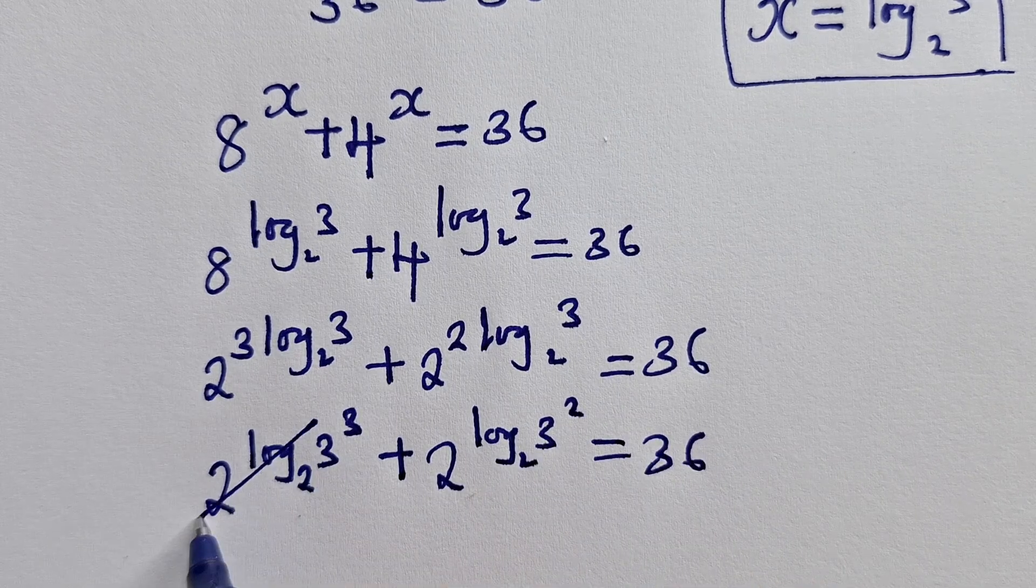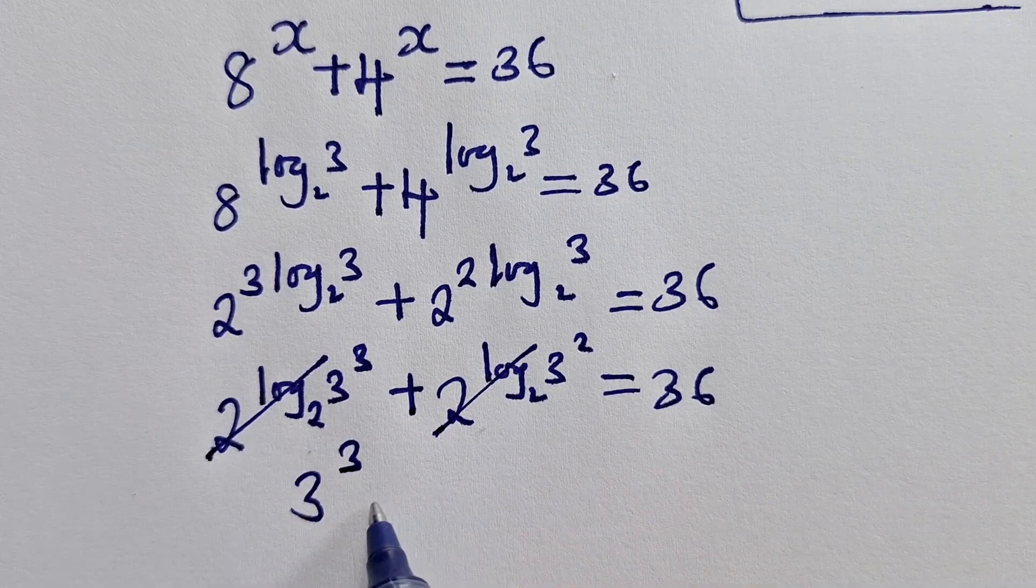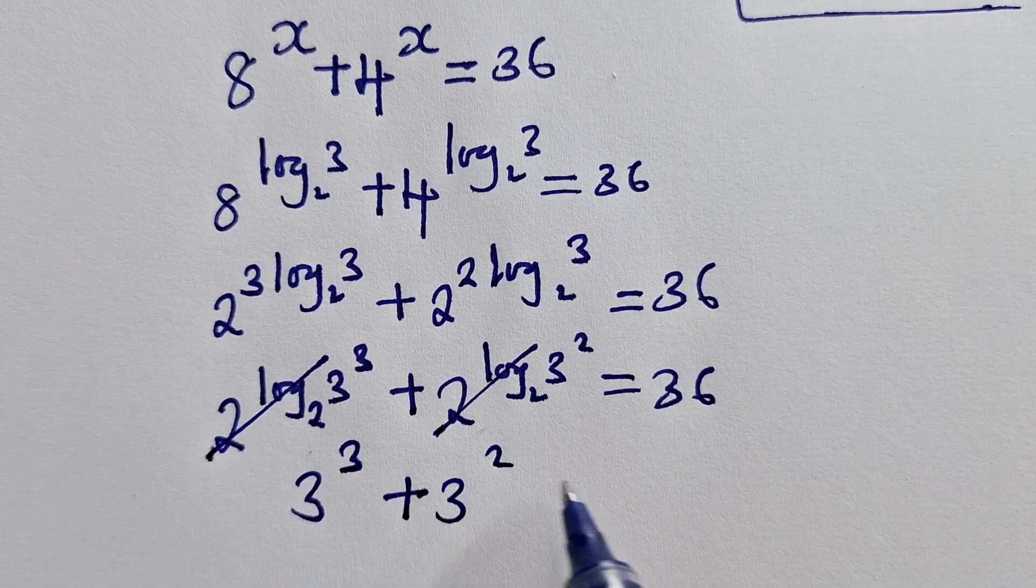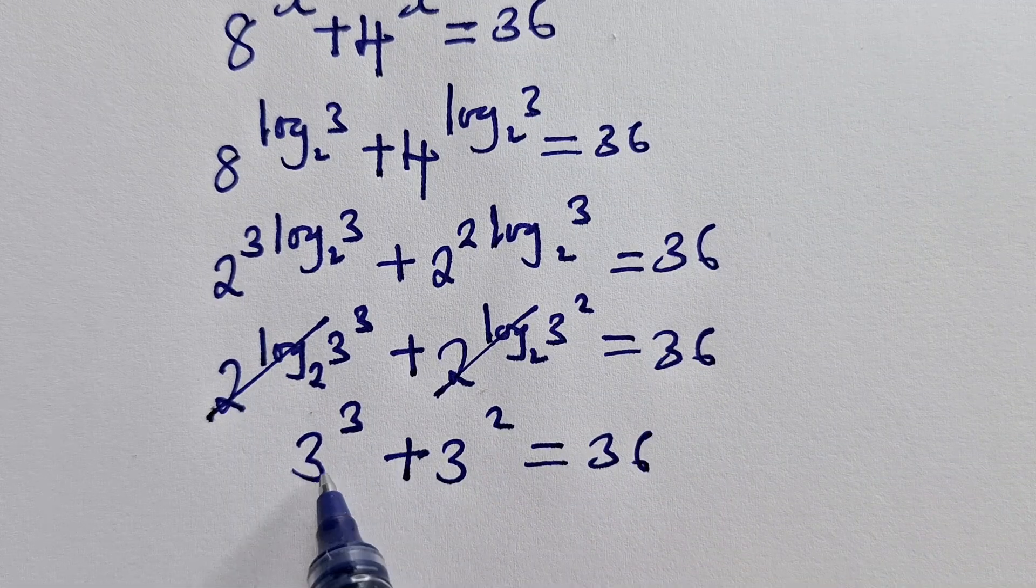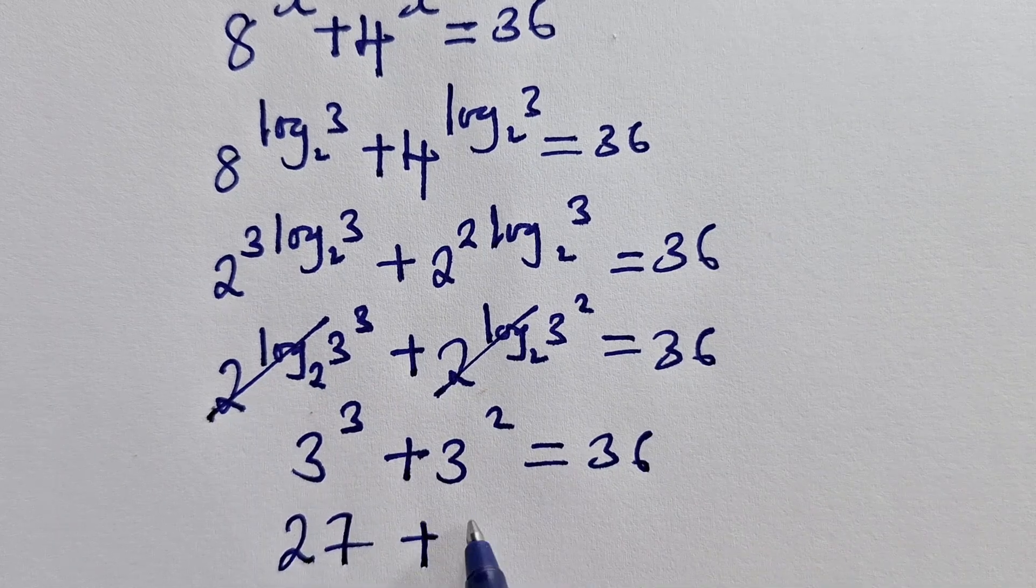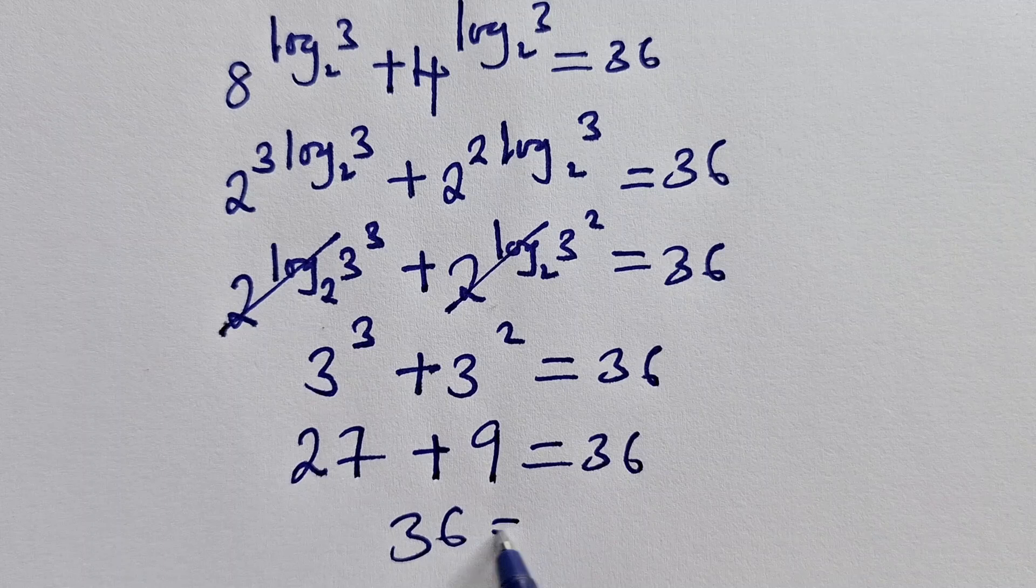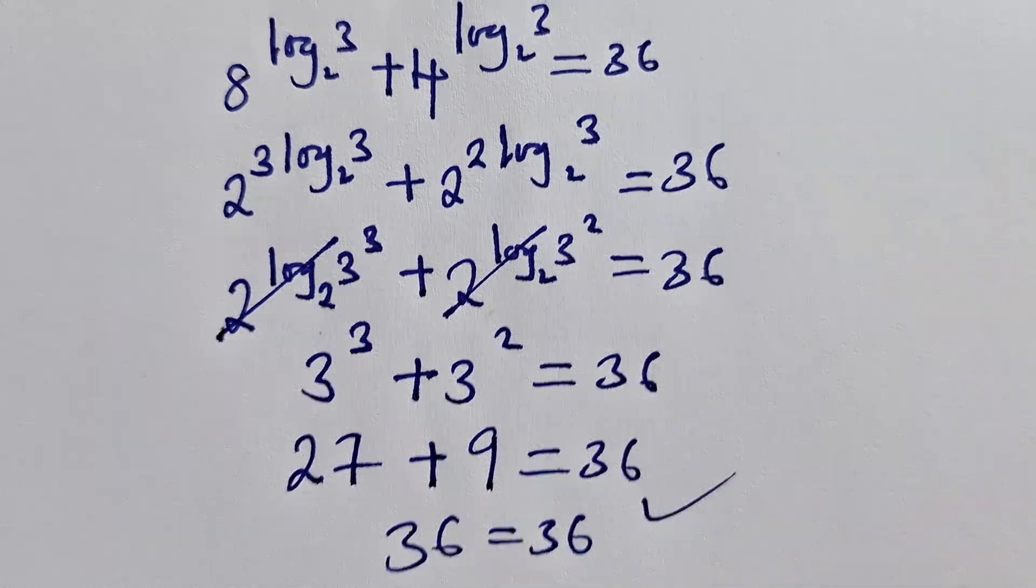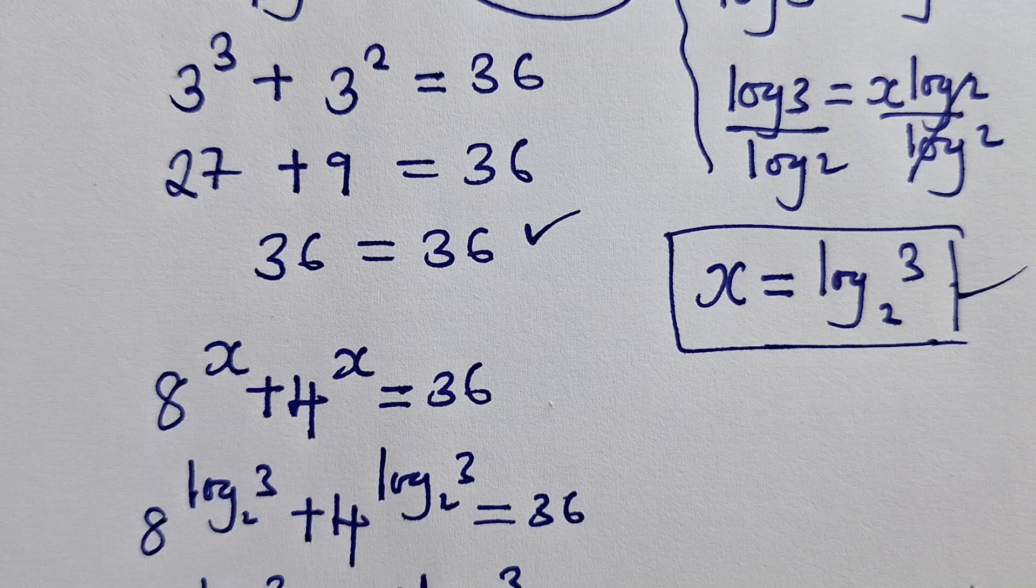Using the log properties, these two cancel. We shall remain with the 3 power 3. Even here, we shall remain with the 3 power 2, which is equal to 36. So 36, here 3 power 3, give us a 27. 3 power 2, give us a 9, which is equal to 36. When we add 36, equal to 36, it holds. The value of x is this right over here.